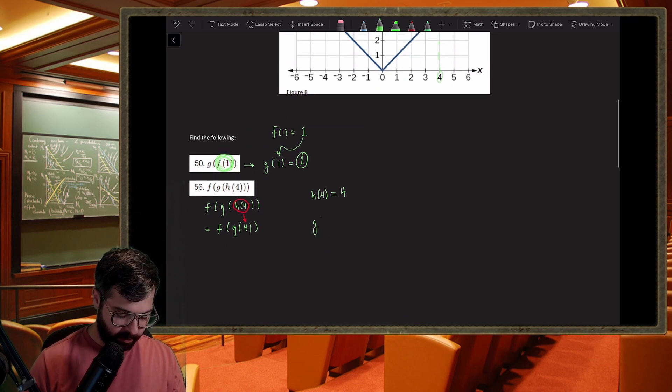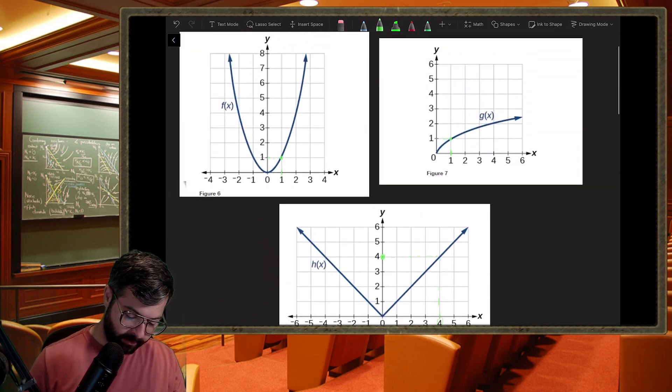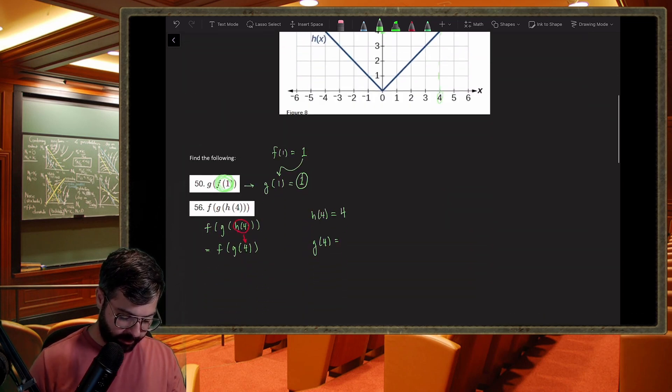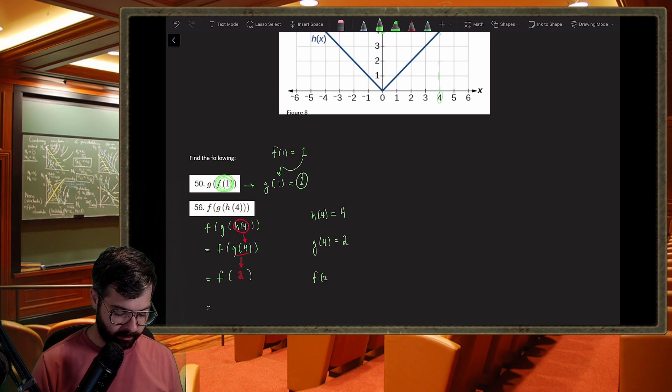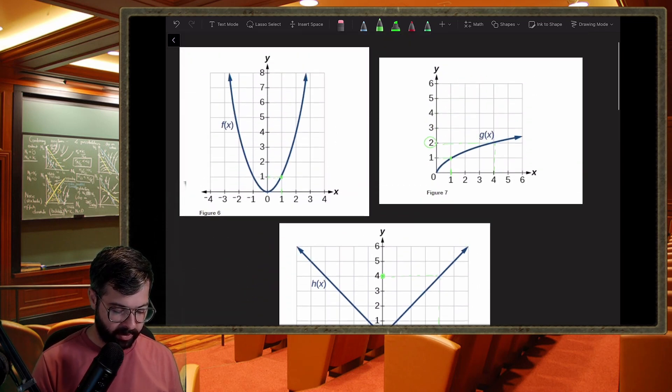Now we need to find out what g of four is. So g of four - we come to the graph for g. Input of four gives us an output of two, because g of four is two. So what this whole expression really means is I'm looking for f of two. And so f of two, come into the graph, input of two is an output of four.